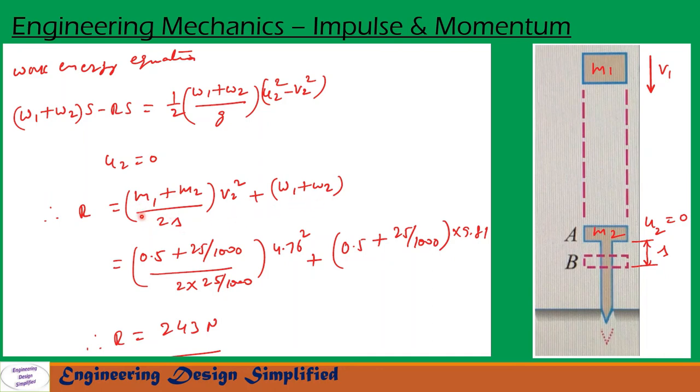So here m1 and m2 are the mass of the hammer and m2 is the mass of the nail. So after substituting the values and simplification, we get resistance offered by wooden block r equal to 243 newtons.